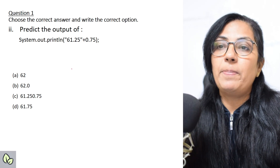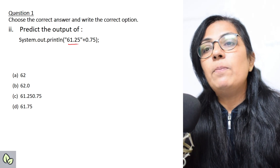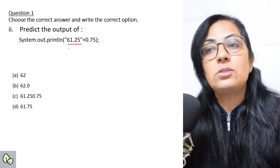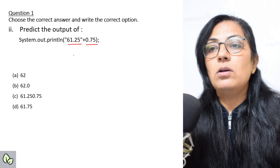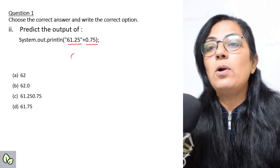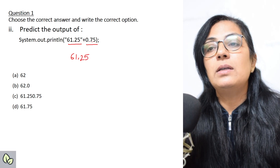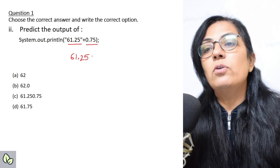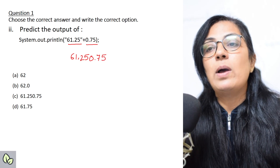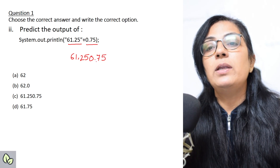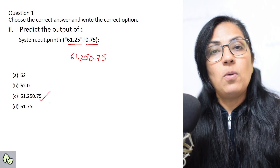We move on to the next question, which is similar but here Double.parseDouble() is not used. 61.25 is a string, and after that 0.75 is a real constant. So 61.25 will be written as-is and concatenated, giving the answer 61.250.75. That is your correct answer.